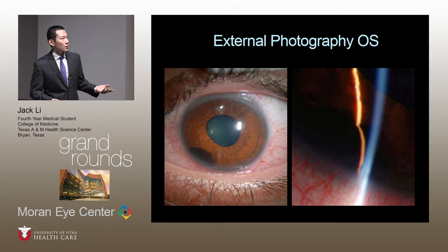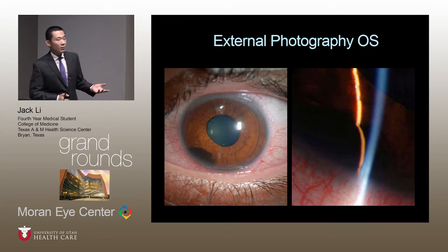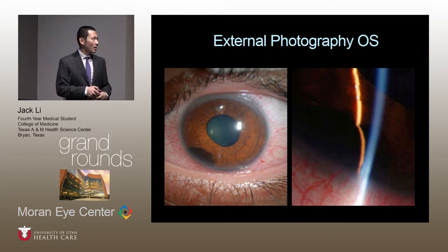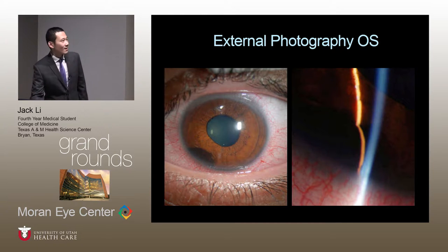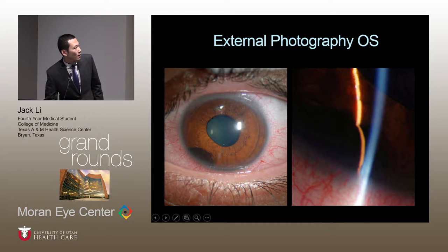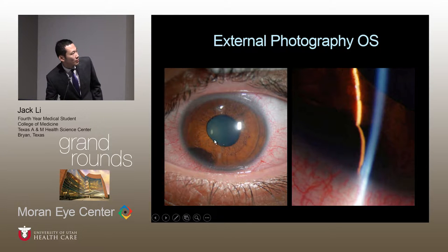This is an external photograph of his left eye, the eye he's complaining of redness. When I look at this, I immediately see a dark lesion at approximately 6:30 to 8 o'clock. This looks like a mass lesion because it appears to be changing the shape of the pupil. If anybody has other comments, that would be helpful for my education.